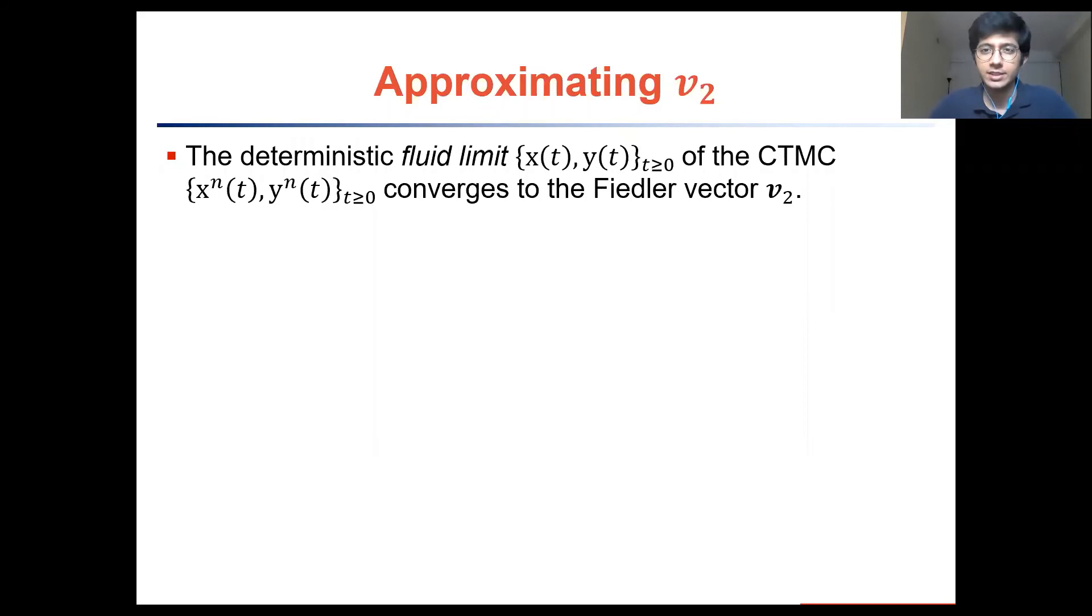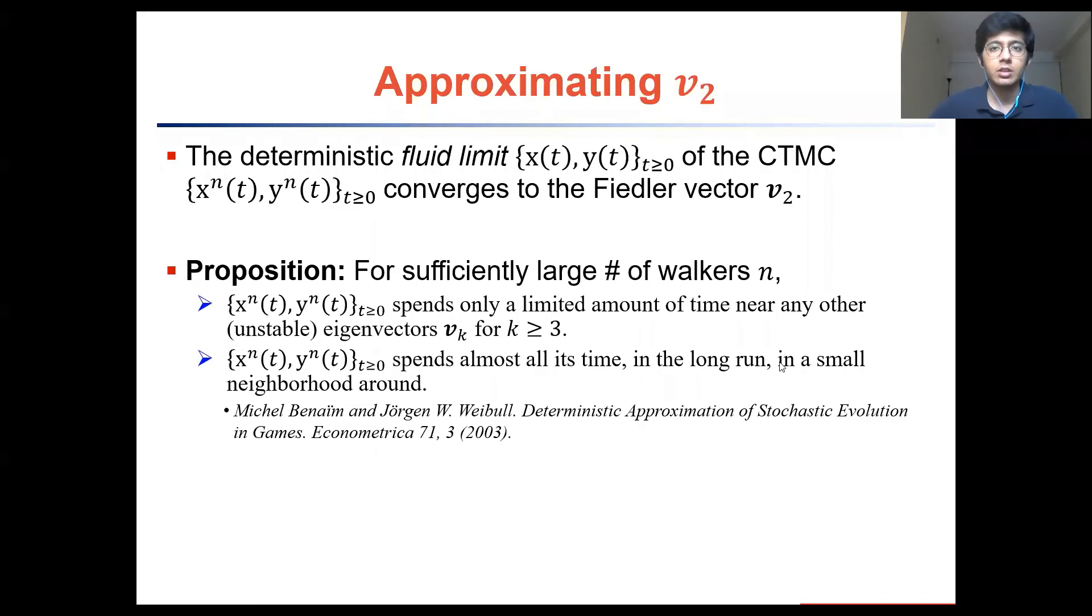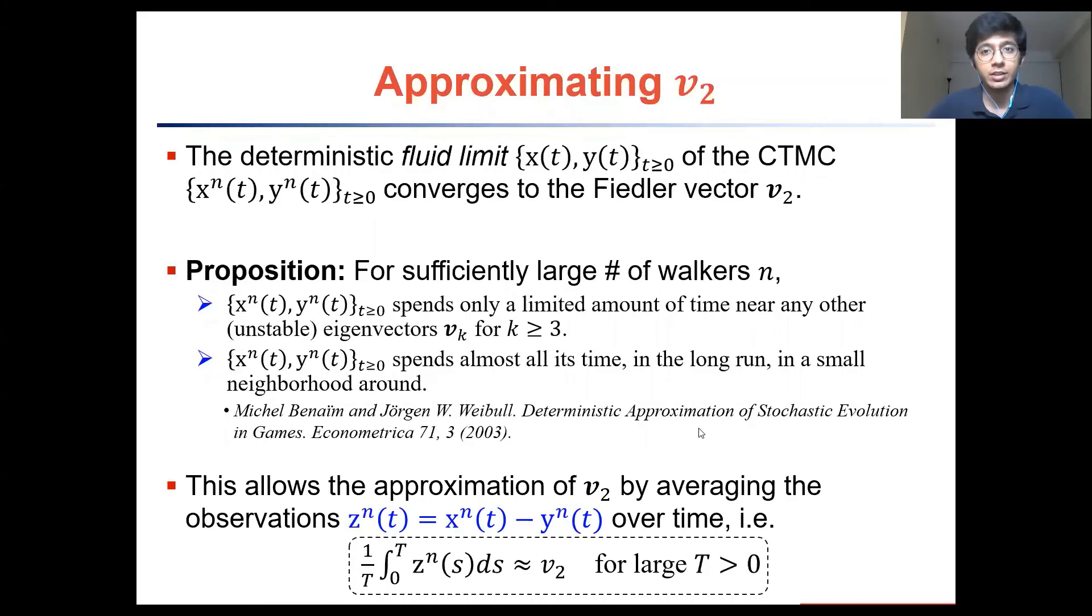For our practical use we still need to tie things up and consider how this influences the behavior of a stochastic process over the long run instead of just over a finite time horizon. By citing some literature we show that our stochastic process will actually never stick around any unstable solution of the ODE system in the previous slide for too long. It will eventually spend nearly all its time in only a small neighborhood around the asymptotically stable fixed point v2, which is the Fiedler vector. This is actually great news for us since it allows us to approximate the Fiedler vector by averaging z raised to n of t by subtracting the density distributions of type x and type y walkers, and we believe that it should provide a good approximation of the Fiedler vector over the long run.